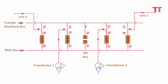Because of this arrangement, the load of any bay can be shifted onto the transfer bus. For example, to shift the load of transformer 1 to the transfer bus: first, close the auxiliary isolator of transformer 1; close both isolators of the TBC bay; charge the TBC breaker; open the main circuit breaker of transformer 1; then open the bus and line isolators of transformer 1. Hence, the load of transformer 1 is shifted to the transfer bus. To take the load back to the main bus, the exact reverse procedure is followed: close bus and line isolators of transformer 1, close the circuit breaker of transformer 1, open the TBC circuit breaker along with both TBC isolators, and finally open the auxiliary isolator of transformer 1. Note: in case of a fault on the main bus, all bays connected to the bus get interrupted.